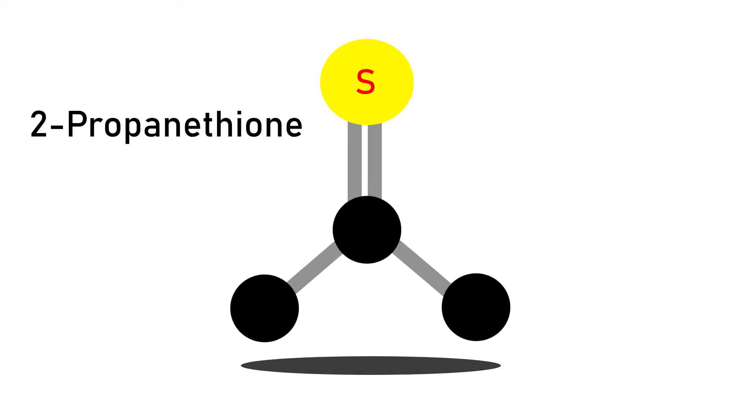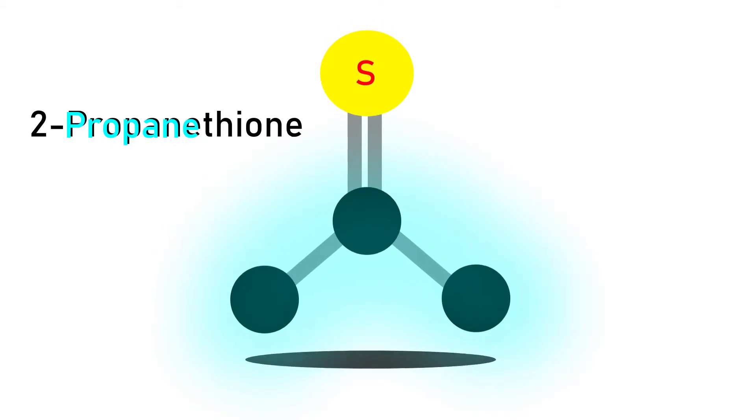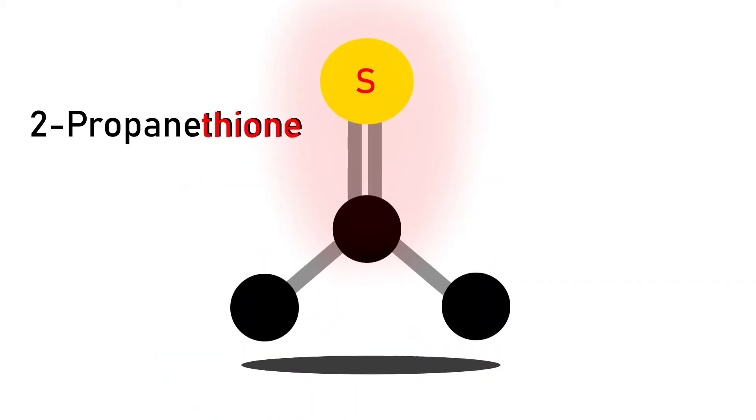Thioacetone's IUPAC name is 2-Propane Thione, and you can see the 3-Carbon Propane part of the molecule there at the bottom, as well as the thione base at the top.